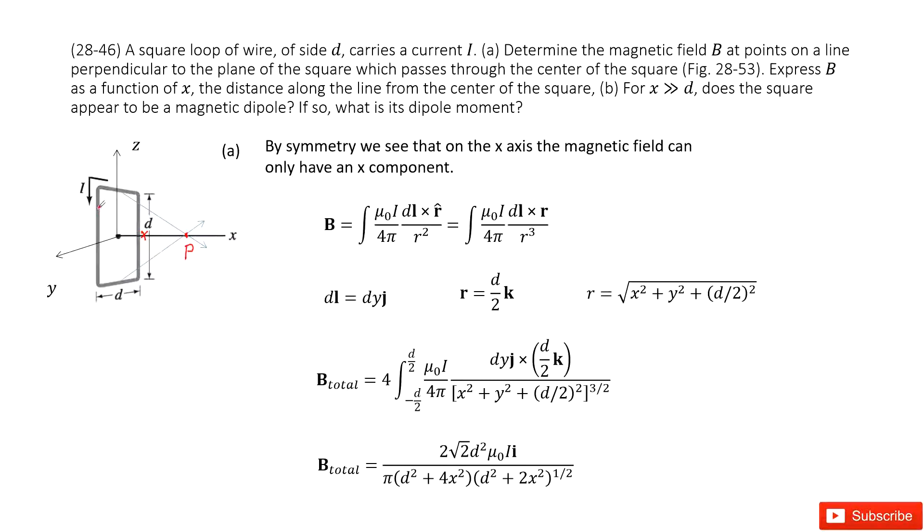Similarly, for the front side and the back side, if we draw it, we can see only x components survive. So in this case, by symmetry, only the x component of the magnetic field survives.